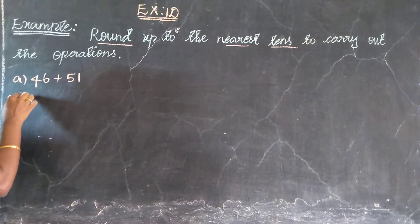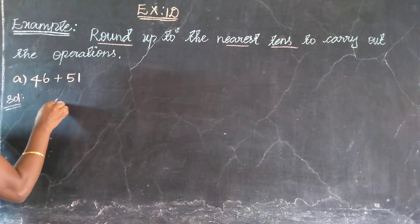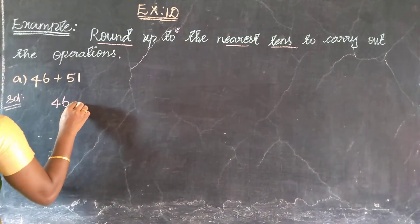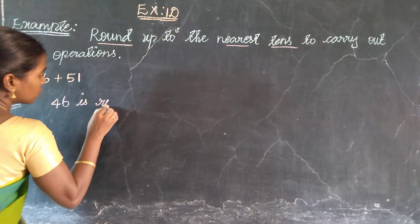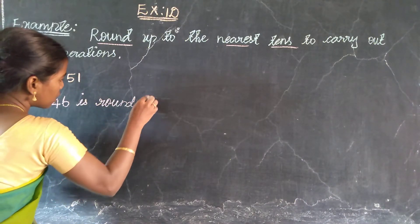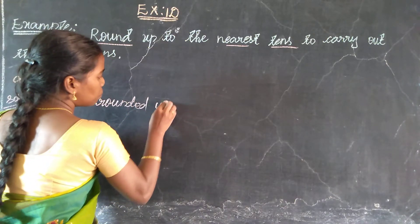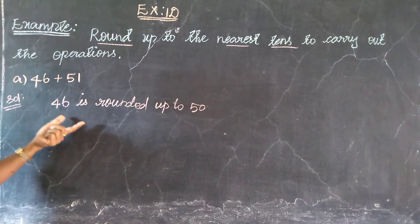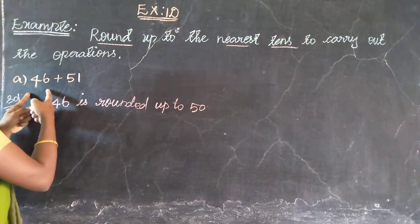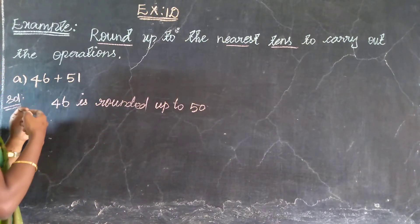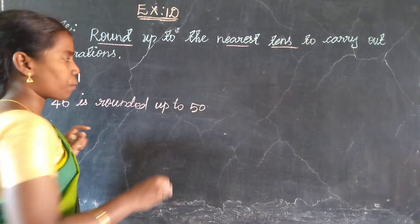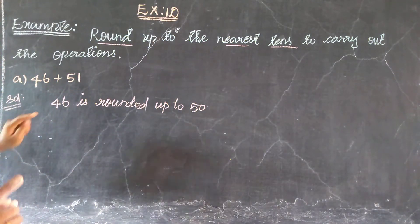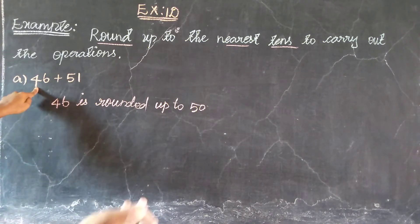Solution. First value is 46. It is a 2-digit number with ones and tens. We need to find the tens place. The starting value is 40 and the ending value is 50.